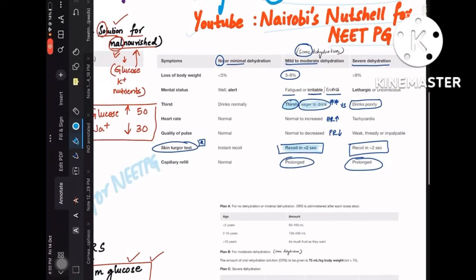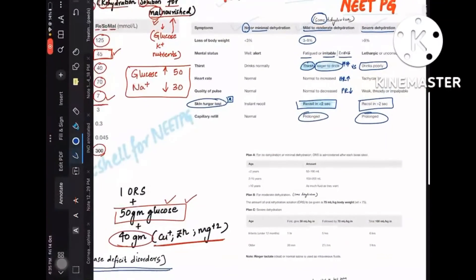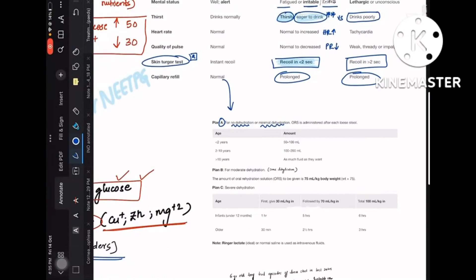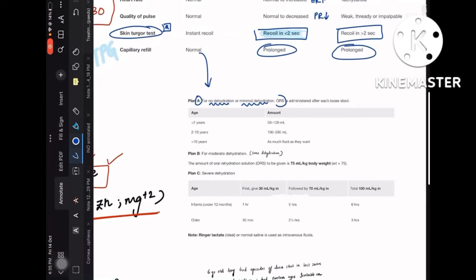These are the points that you need to remember in some dehydration. So when now that you have done with the categorization of minimal, moderate, and severe dehydration, now we need to know the treatment for these. So there are three different plans of treatment. Plan A is for no dehydration or minimal dehydration—that is the first category here.